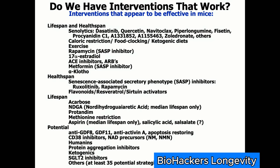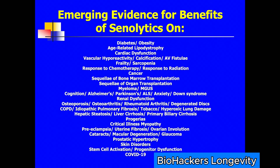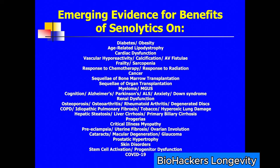Over the years, preclinical studies have indicated that there may be interventions that can target some of these processes. There are at least 35 classes of interventions in preclinical studies. I'll focus on senolytics, but I could be talking about NAD precursors or sirtuin agonists or whatever. There's emerging evidence for benefits of agents that target cellular senescence — either senomorphic agents that reduce the secretory state of senescent cells like metformin, rapamycin, ruxolitinib, or senolytics that eliminate senescent cells selectively, on at least 70 conditions in preclinical models.